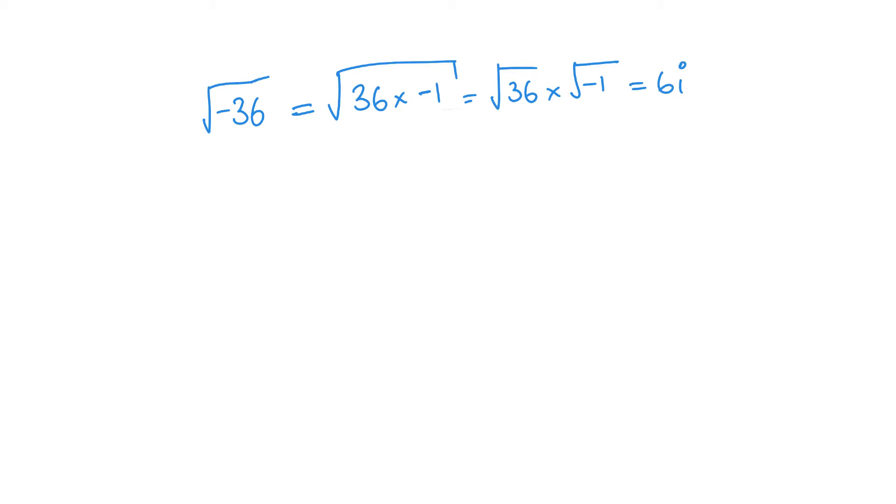So minus 36, square root of minus 36 is 6i, where i is the square root of minus 1. Have a look at another one. Minus root 28, again I want to split this up so I'm just going to do 28 times negative 1.